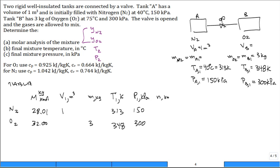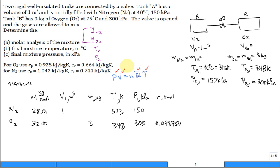Can we calculate the number of moles of oxygen? Yes — it's the mass divided by the molar mass: 3 kg divided by 32 kg/kmol, which gives 0.09375 kmol. Now, knowing the volume, temperature, and pressure of Tank A, can we calculate the number of moles of nitrogen? Yes, using the ideal gas law PV = nR̄T. We calculate the number of moles of nitrogen to be 0.057642 kmol.